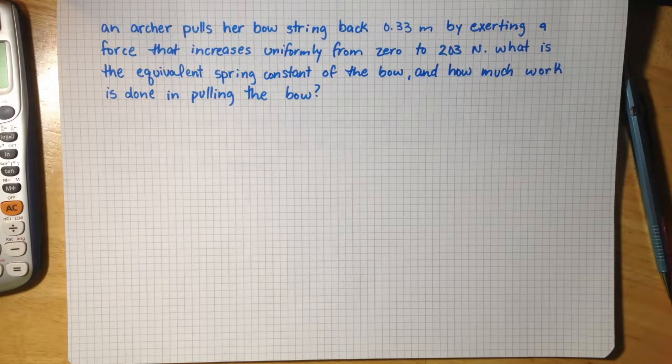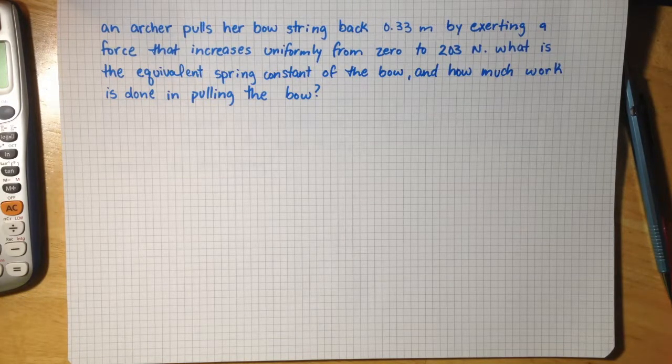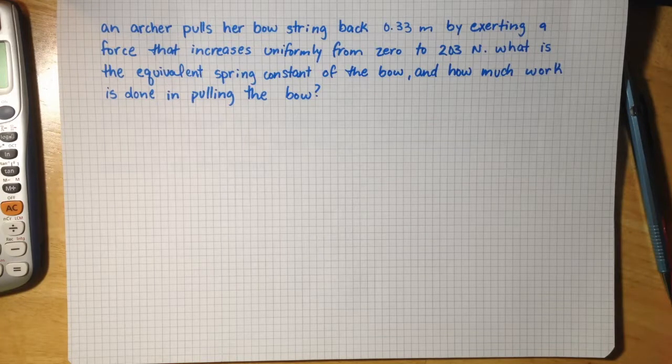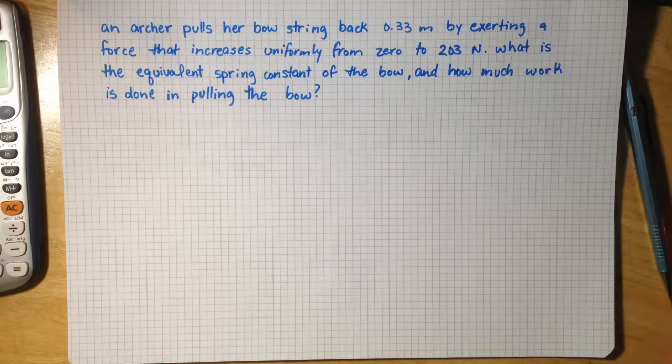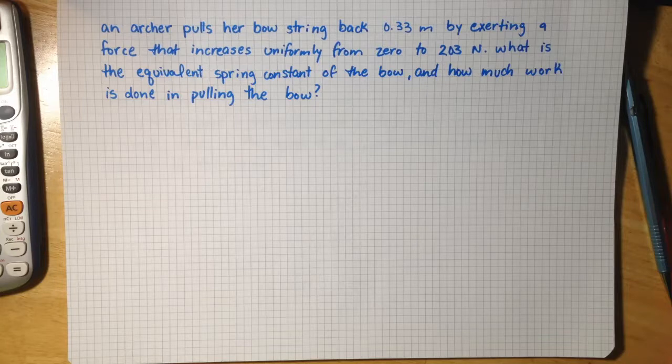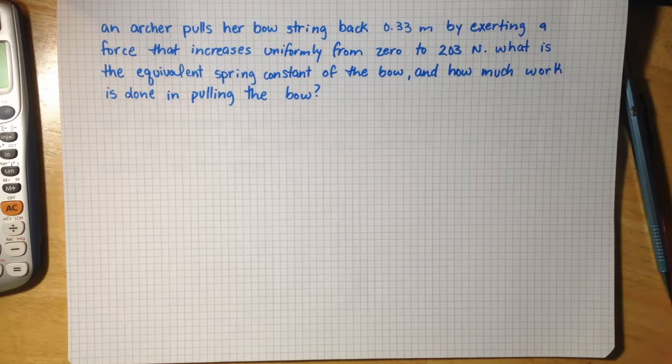An archer pulls her bow string back 0.33 meters by exerting a force that increases uniformly from 0 to 203 newtons. What is the equivalent spring constant of the bow and how much work is done in pulling the bow?